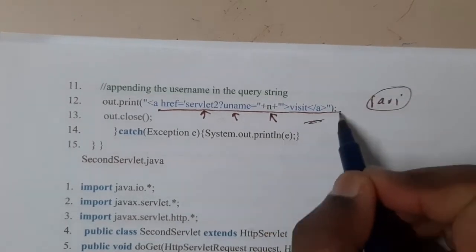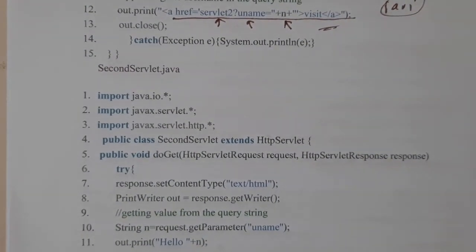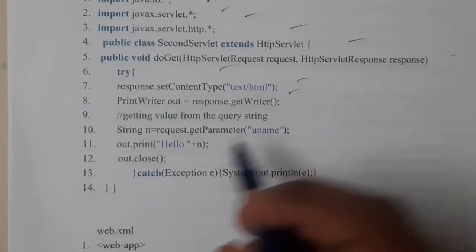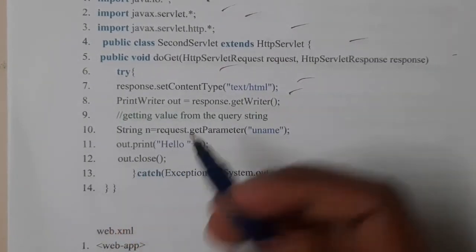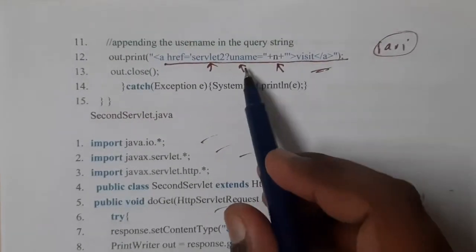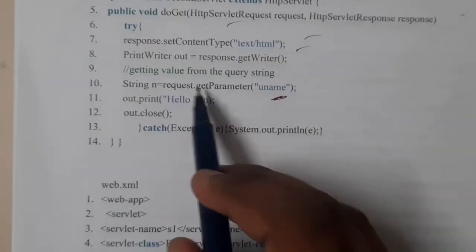Now in the second program you will be directly - so this is nothing but the boilerplate code. After that you will be directly connecting and collecting the values, that's it. So getParameter uname - already uname is specified here, so name is nothing but Ravi, so Ravi is stored in n, so hello Ravi will be printed again, same logic.